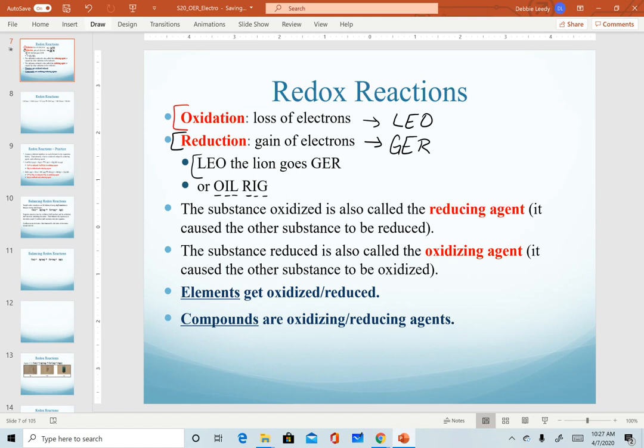The substance that gets oxidized is also called the reducing agent. When we use the word agent in chemistry, it describes a substance that causes something else. When we say reducing agent, we're referring to a substance that causes another one to be reduced. Whatever gets oxidized will be the reducing agent.